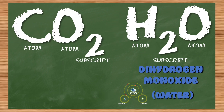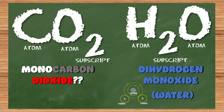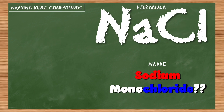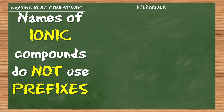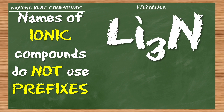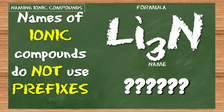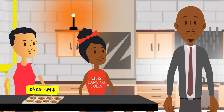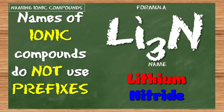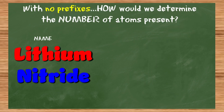So CO₂ — that's carbon dioxide? Indeed. Why wasn't it 'monocarbon dioxide'? The first atom only gets a prefix if it's greater than one. Why don't we do any of this with sodium chloride? Sodium chloride is ionic — we don't use any prefixes when naming ionic compounds. So here's an ionic compound: Li₃N. To name it, it's simply lithium nitride.